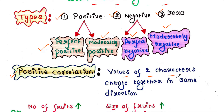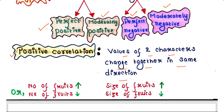Positive correlation: when the values of two characters change together in the same direction, the relationship is called positive correlation. In our case, number of fruits as well as size of fruits both are increased after applying fertilizer, or else number of fruits as well as size of fruits both are decreased after applying fertilizer.